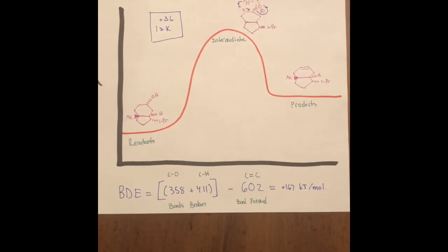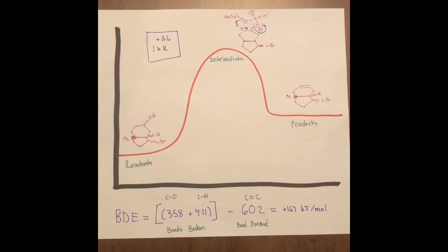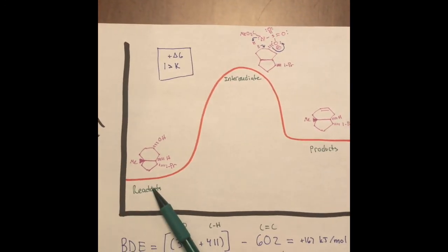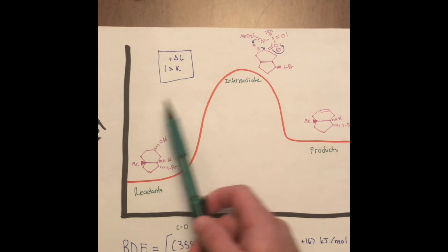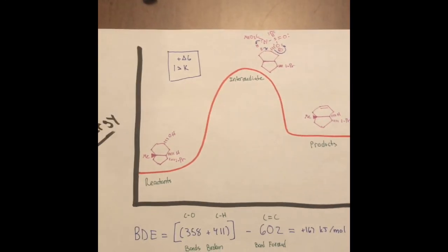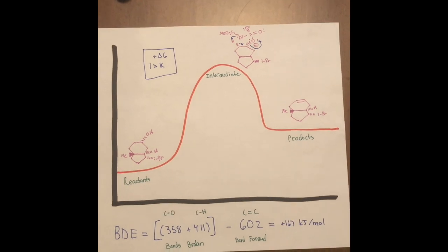In order to speed up this reaction, since it's endothermic, you would need to increase the temperature, which would make the reactants up here and the products down here. That is my presentation. I hope you enjoyed.